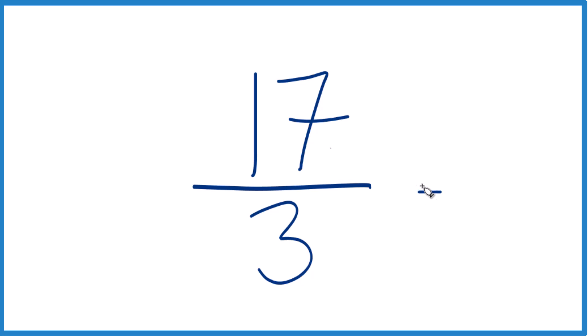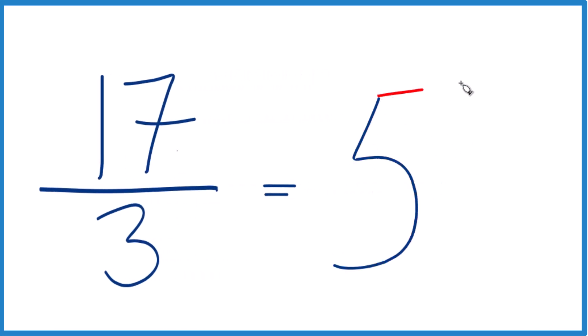So three goes into 17. Well, five times three, that's 15. And then we'd have two left over. We just bring the three across. So 17 thirds, that equals five and two thirds as a mixed number.